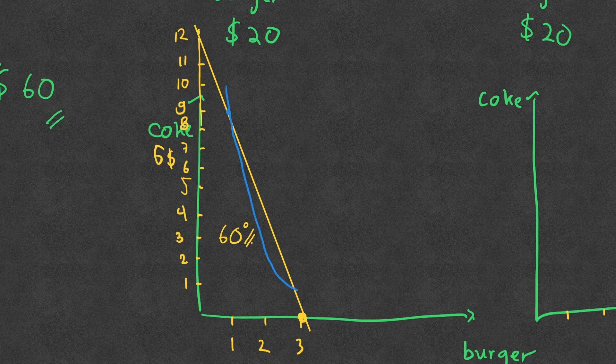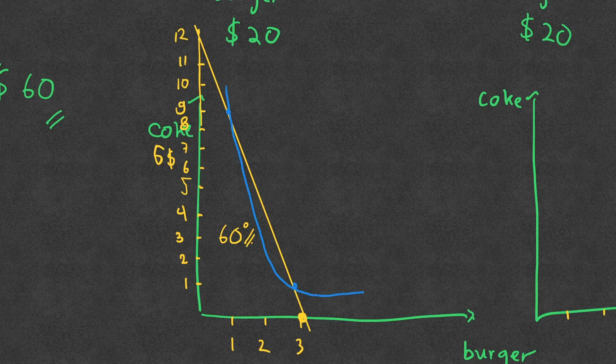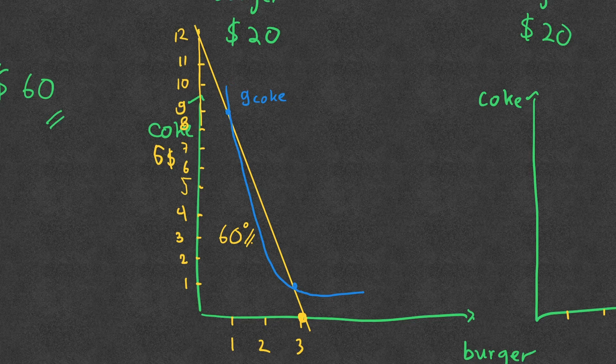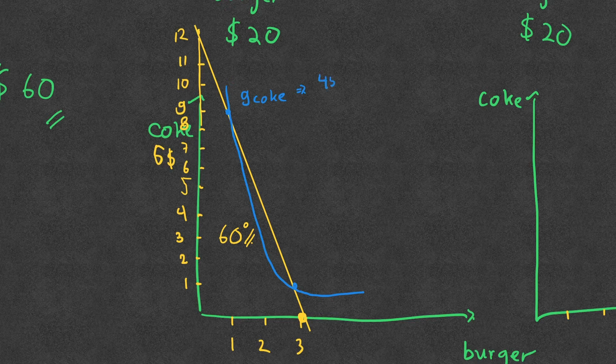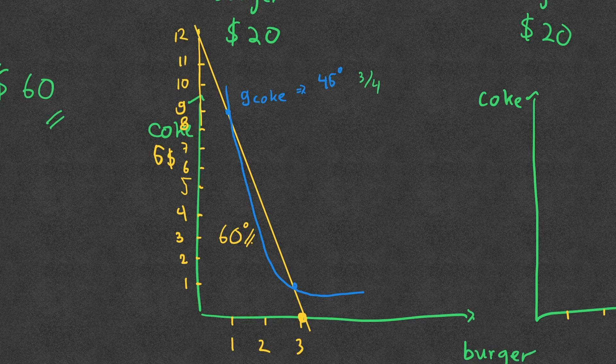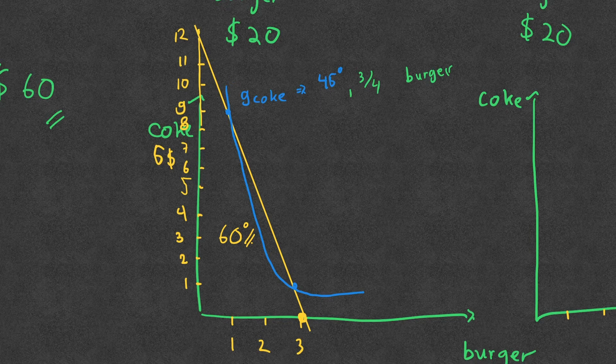If we say there is one indifference curve here, and this is meeting at this level and going like this, which means here for nine cokes. How much can you actually get? Because nine cokes costs $45 and money left is $15, so actually you get nine cokes and three-quarters of a burger, which does not make sense.